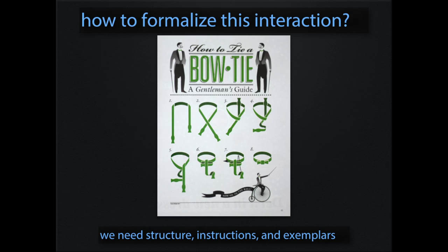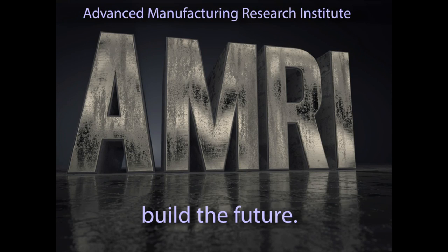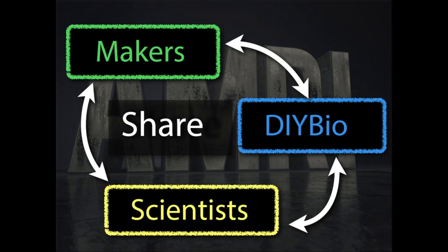To formalize this interaction, we wanted a conceptual framework — a way to crystallize the experience of working in science and working with the maker community, so we could introduce other people to it. That's how we came up with the AMRI, the Advanced Manufacturing Research Institute. By sharing knowledge and information, we could unify the maker community, the DIY bio community — do it yourself biology, where hobbyists look at how bacteria grow and how cells function — and the science community.